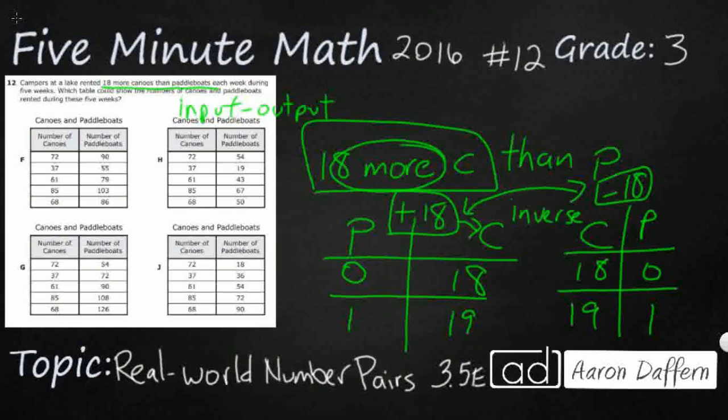So looking at our answer selections here, it looks like we've got canoes on the left, paddle boats on the right. So we're going to use this right here. We've already decided we're looking for a minus 18 rule. So let's see if we can just put this up here, minus 18. See if any of these work out.